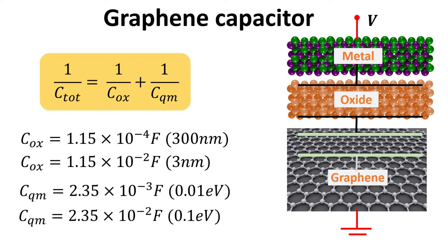Let's look at some typical numbers for the oxide capacitance. For a 300-nanometer silica, the C-ox is about 1 times 10 to the power of minus 4.